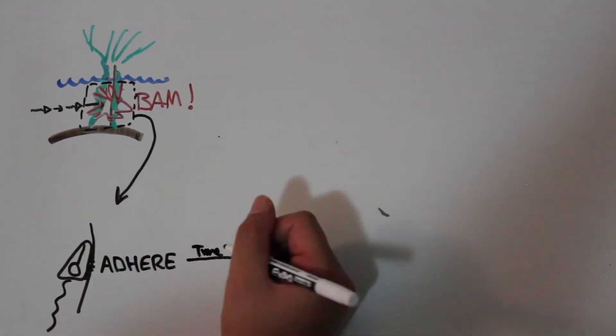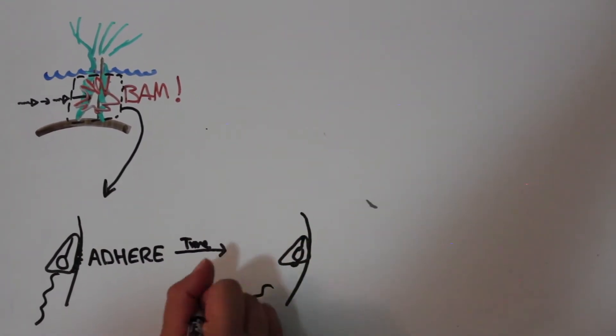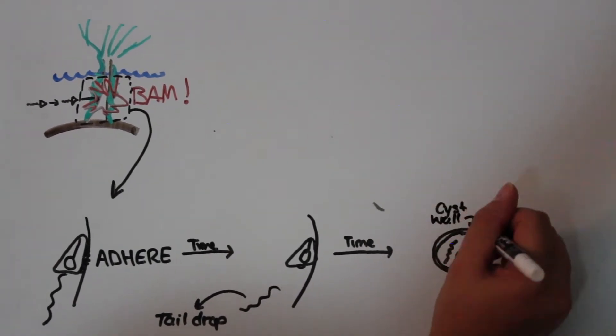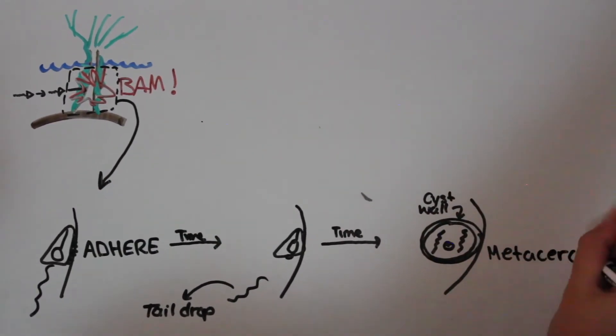Upon hitting a hard surface, the circarii attaches, drops its tail, and secretes a protective cyst wall. It is now called a metacircarii, which is the infective stage of liver fluke for the definitive host.